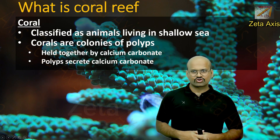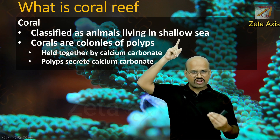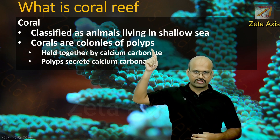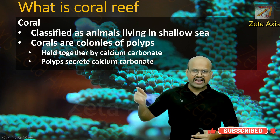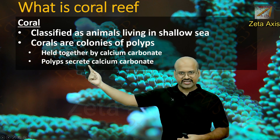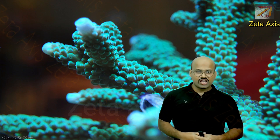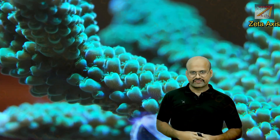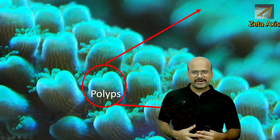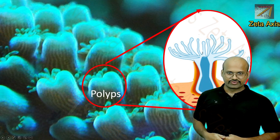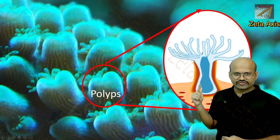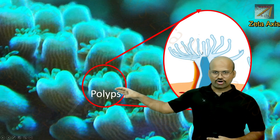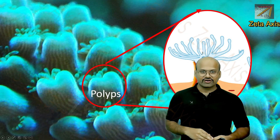Corals are basically classified as animals and they live in shallow sea waters. Corals are actually colonies of polyps — the whole structure is called a coral but the individual organisms are called polyps. This colony is held together by calcium carbonate, which is secreted by the polyps themselves. In an image of a coral reef, the small nodules we see are each individual polyps. A diagrammatic representation shows that polyps have tentacles — small extending arms — and a body connected to the calcium carbonate substrate below.